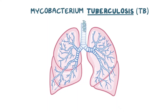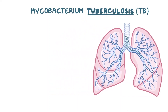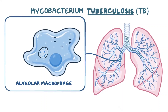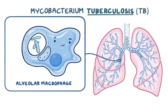Ultimately though, TB can avoid the mucus traps and make its way to the deep airways and alveoli, where we have macrophages that eat up foreign cells, digest, and destroy them. With TB, they recognize foreign proteins on their cell surface and phagocytize them, or essentially package them into a space called a phagosome.